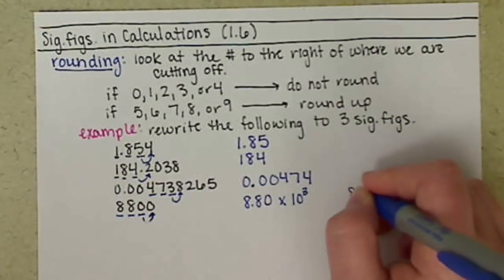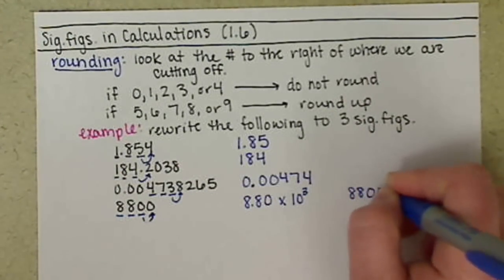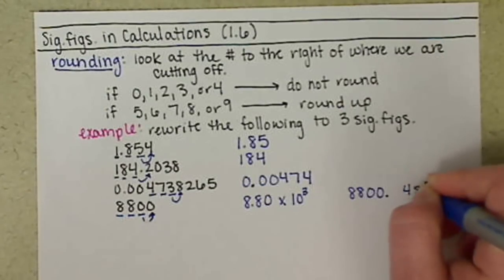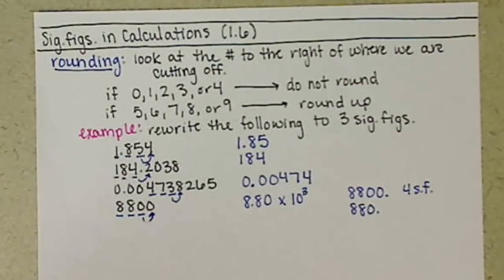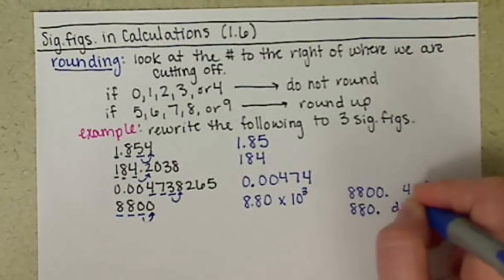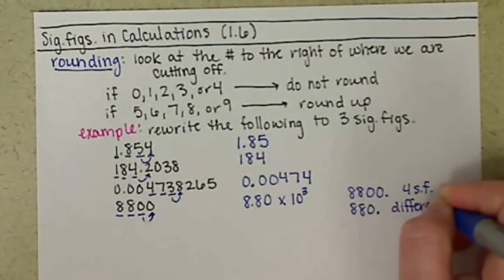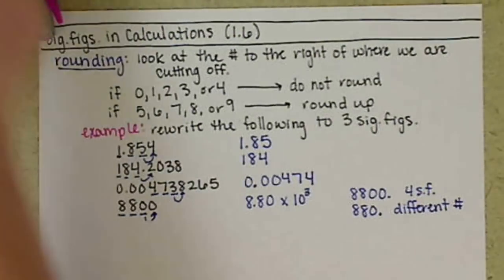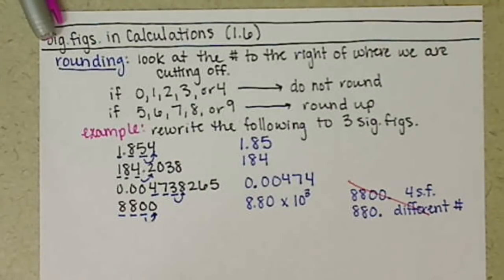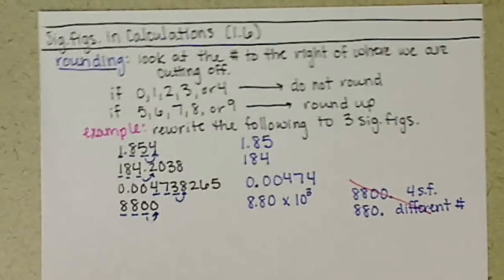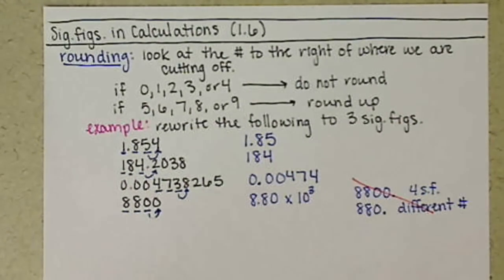So the only way to write this number expressed to three significant figures is to write it in scientific notation. So again, we can't write this as 8,800 because that has four sig figs. We also can't write this as 880 with a decimal point because this is a different number. So we'll use a red pen, cross those out, those are wrong. So again, rounding rules, nothing new, standard rules apply, just want to make sure we are all on the same page as to what those rules are.